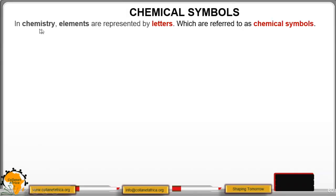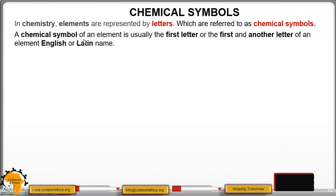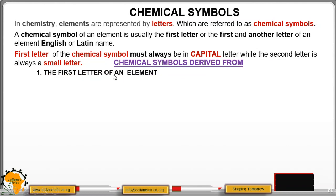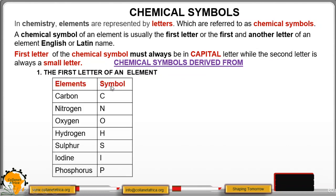In chemistry, elements are represented by letters which are referred to as chemical symbols. A chemical symbol of an element is usually the first letter or the first and another letter of element, English or Latin name. First letter of the chemical symbol must always be in capital. It is good to note this. You'll apply this all through chemistry course to form four. The second letter is always a small letter. Chemical symbols derived from the first letter of an element: carbon, capital C; nitrogen, capital N; oxygen, capital O; hydrogen, capital H; sulfur, capital S.